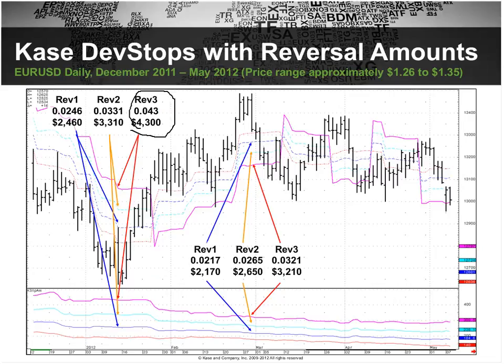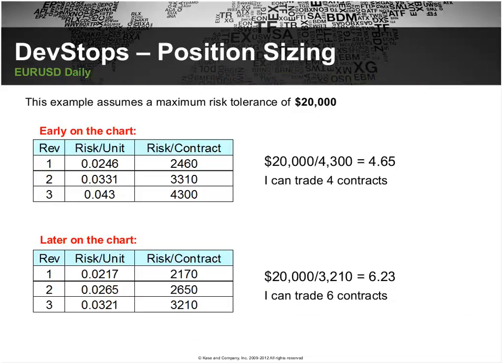Here's a similar example where the stops go from wide to narrow instead of narrow to wide. Here you're risking $4,300, and here you're risking $3,210. If you're willing to risk $20,000 and the risk per contract is $4,300, you can trade four or maybe five contracts. When risk decreases, you could add one or two contracts to your total.